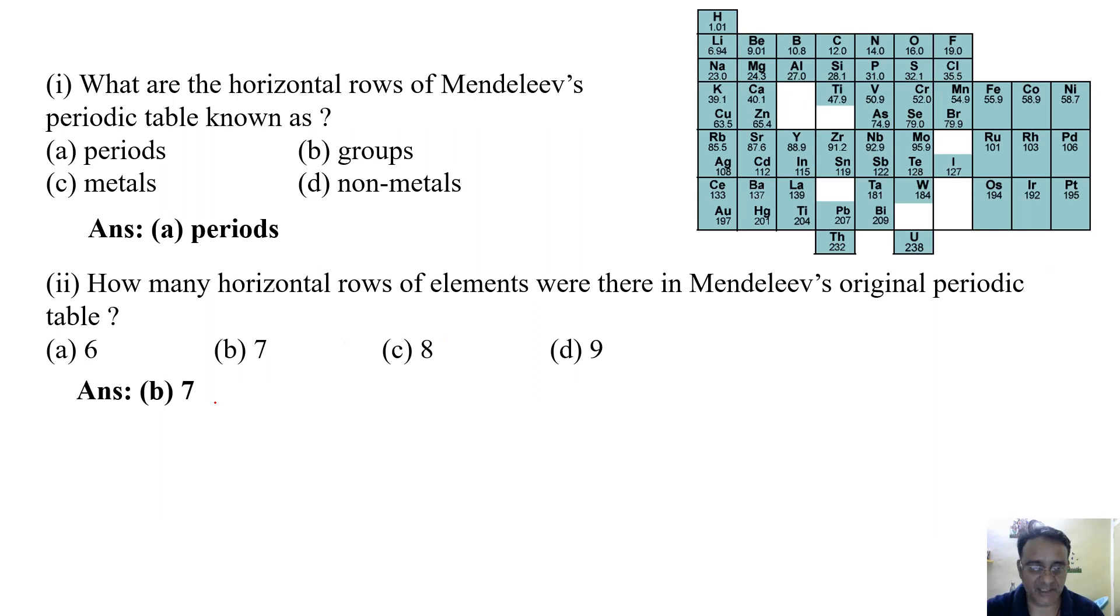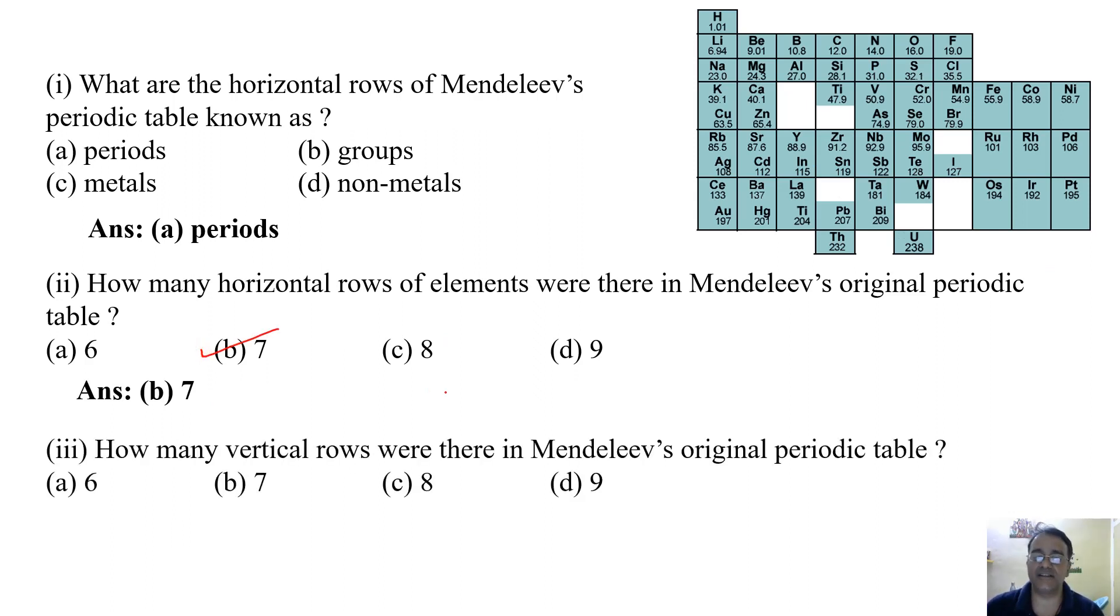How many vertical columns were there in Mendeleev's original periodic table? 6, 7, 8, 9. The correct answer is 8.